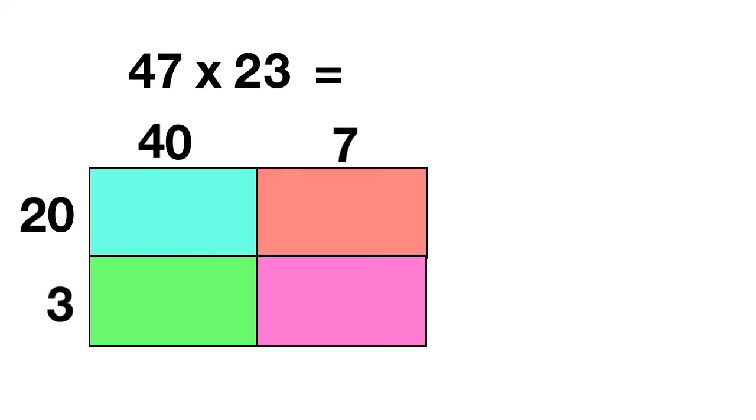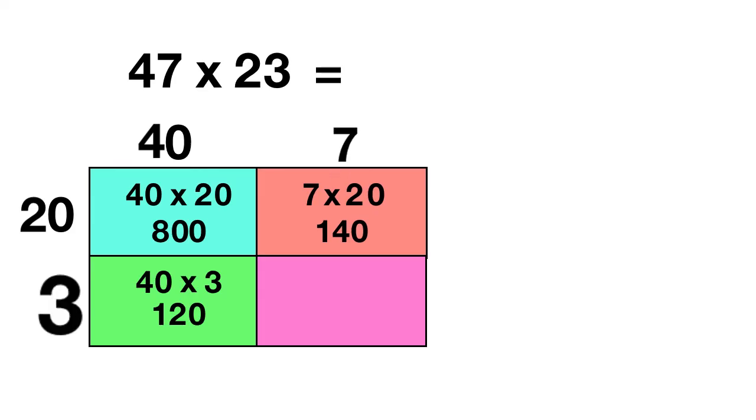Then you start multiplying 40 times 20. Well, 4 times 2 is 8, and we add 2 zeros, 800. Next, you could do 7 times 20. 7 times 2 is 14, and add 1 zero, 140. Next, you do 40 times 3, and 4 times 3 is 12, and then add 1 zero, 120. And finally, we multiply 7 times 3, and we know 7 times 3 is 21.